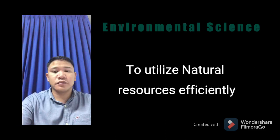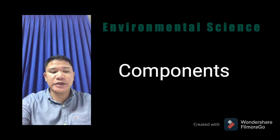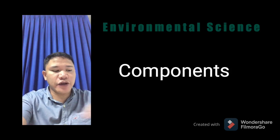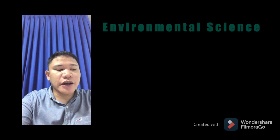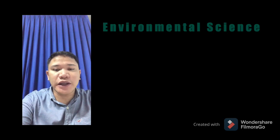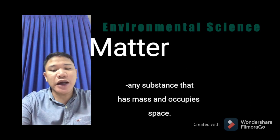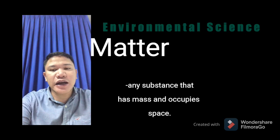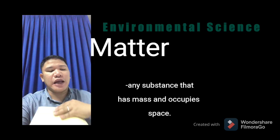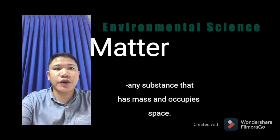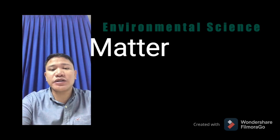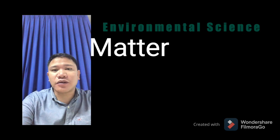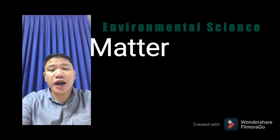Now let's discuss the components of the environment. The environment is composed of four components. The first is matter. Matter refers to anything that has the property of occupying space and the attributes of gravity and inertia. Gravity is the universal force of attraction — that is the reason why we are not flying.